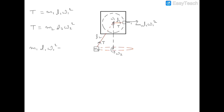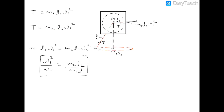Setting the tensions equal: m1 l1 omega1 squared equals m2 l2 omega2 squared. Therefore, omega1 squared over omega2 squared equals m2 l2 over m1 l1. Given a relationship between the masses and lengths, we can find the exact values of the time periods and angular velocities. This is the correct relationship between omega1 and omega2.